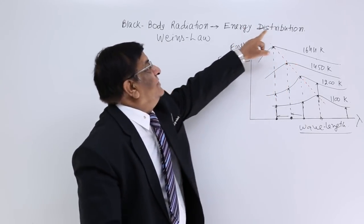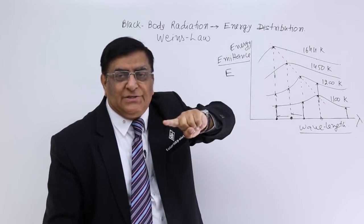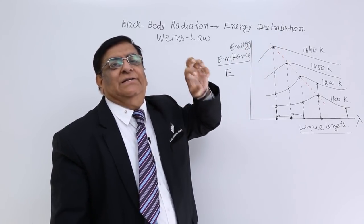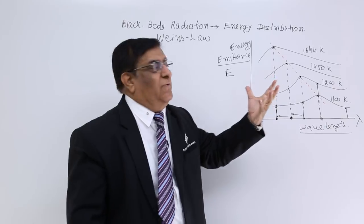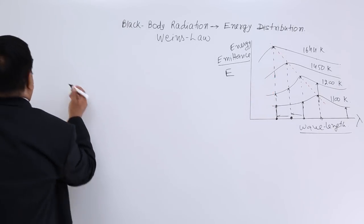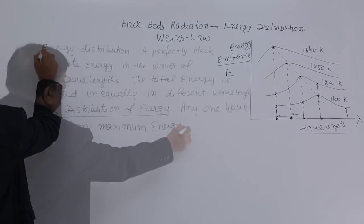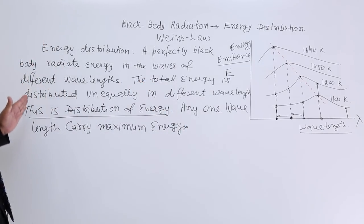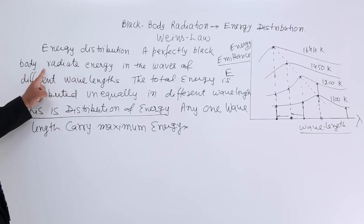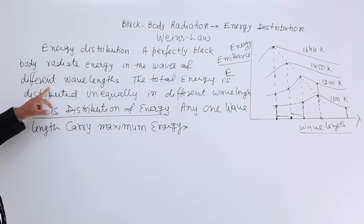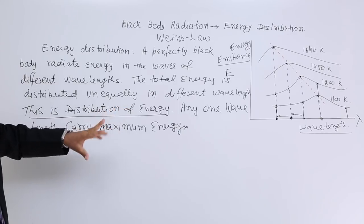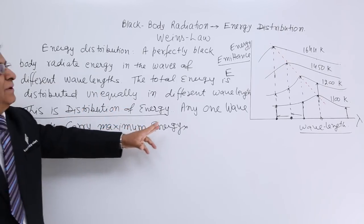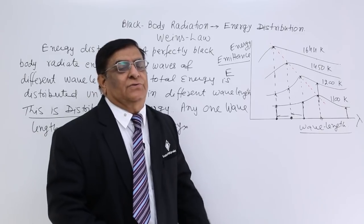This is energy distribution. When there is an emittance of energy, the energy is distributed into various wavelengths — this is the principle of energy distribution. A perfectly black body radiates energy in waves of different wavelengths. The total energy is distributed unequally in different wavelengths, and any one wavelength carries maximum energy.